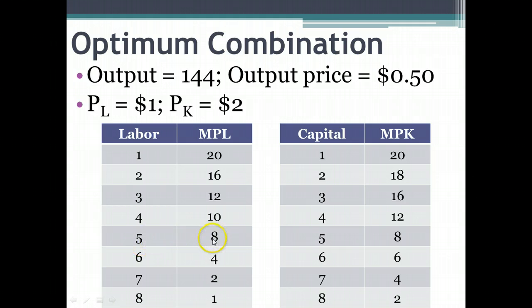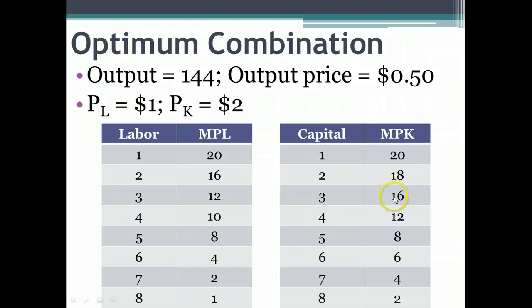The fifth unit of labor gives me 8, marginal product per dollar spent is 8. It's 9 for the second unit of capital, so I'll go ahead and purchase that second unit of capital because it's essentially more efficient and providing me bang for my buck. The third unit of capital gives me 8 units of production per dollar spent. So does the fifth laborer, so I'll go ahead and hire the fifth worker and the second unit of capital.